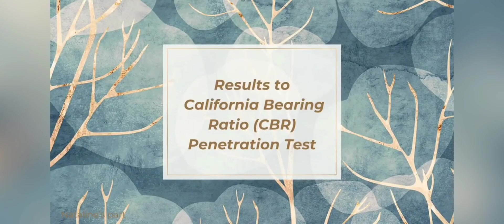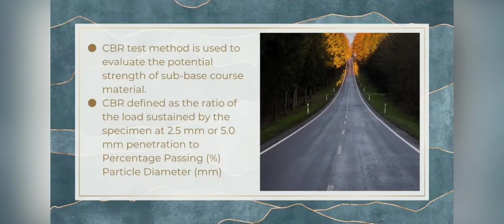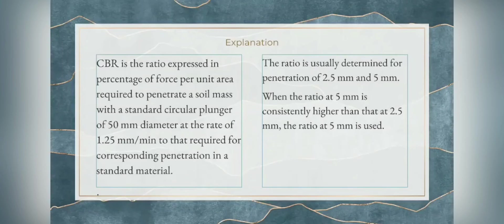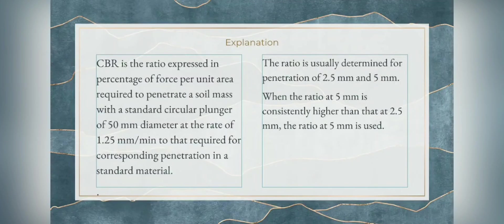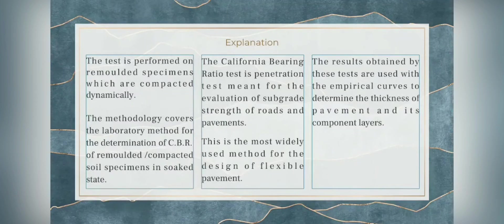Results of the California Bearing Ratio penetration test. The CBR test method is used to evaluate the potential strength of sub-base material. It is defined as the ratio of the load sustained by the specimen at 2.5 mm or 5 mm penetration, expressed as a percentage. It is the ratio of force per unit area required to penetrate a soil mass with a standard circular plunger of 50 mm diameter at the rate of 1.25 mm per minute, relative to that required for corresponding penetration in standard material. The ratio is usually determined for penetration of 2.5 and 5 mm. When the ratio at 5 mm is consistently higher than at 2.5 mm, the 5 mm value will be used. The test is performed on remolded specimens compacted dynamically.